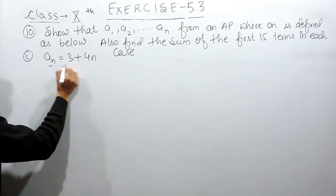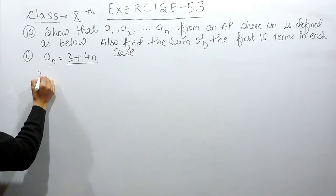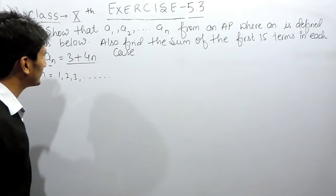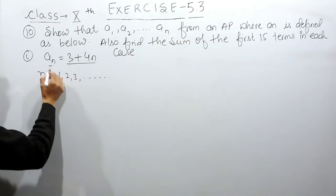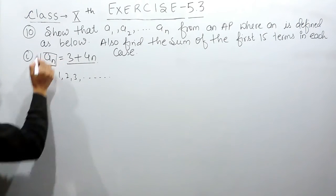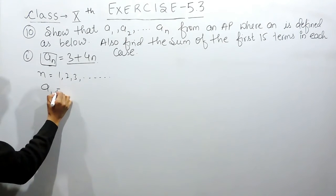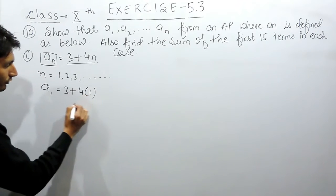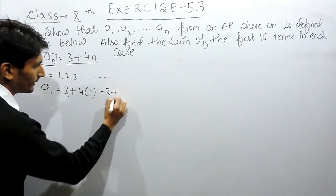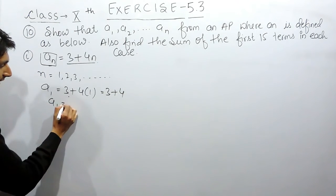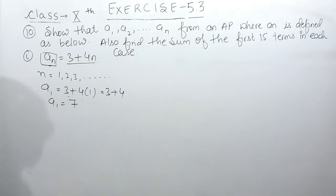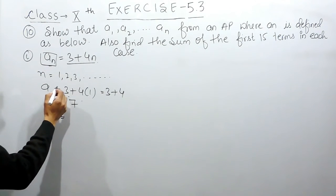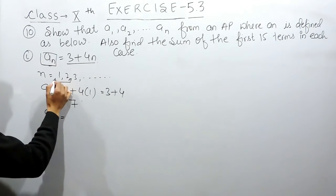So in this case, an is given as 3 plus 4n. If I consider the value of n as 1, 2, 3, and so on, let's find what the values of an will come to. First, taking n as 1, a1 will become 3 plus 4 into 1, which equals 3 plus 4, so the value of a1 will become 7. Now if I consider the value of n as 2, the second term of this AP: